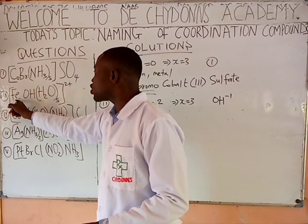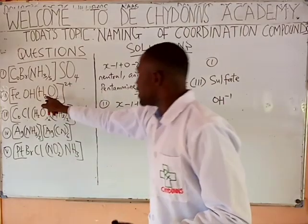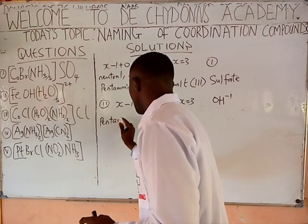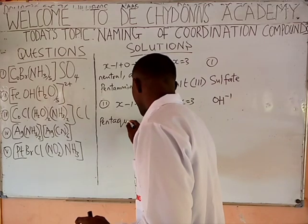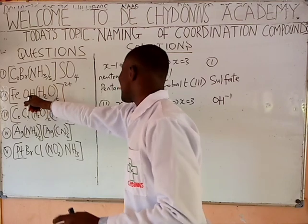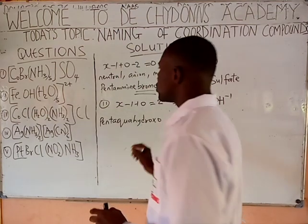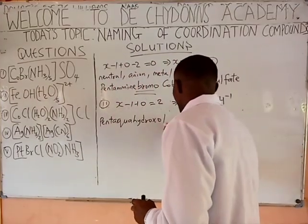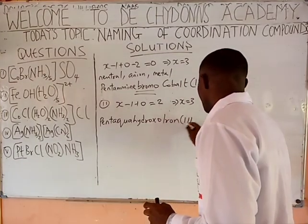You have it in mind as you name. Name the neutral molecule first — you say penta aqua. Water is called aqua, so penta aqua. Then this is an anion, so you say hydroxo. Then the metal: iron(III). Because it forms a cationic ion, you add ion at the end.